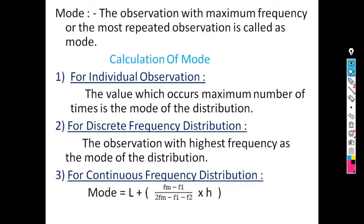For continuous frequency distribution, where data is given as class intervals along with frequencies, we first have to locate the modal, pre-modal, and post-modal classes. After locating these, the formula for mode is: Mode = L + [(Fm − F1) / (2Fm − F1 − F2)] × H.